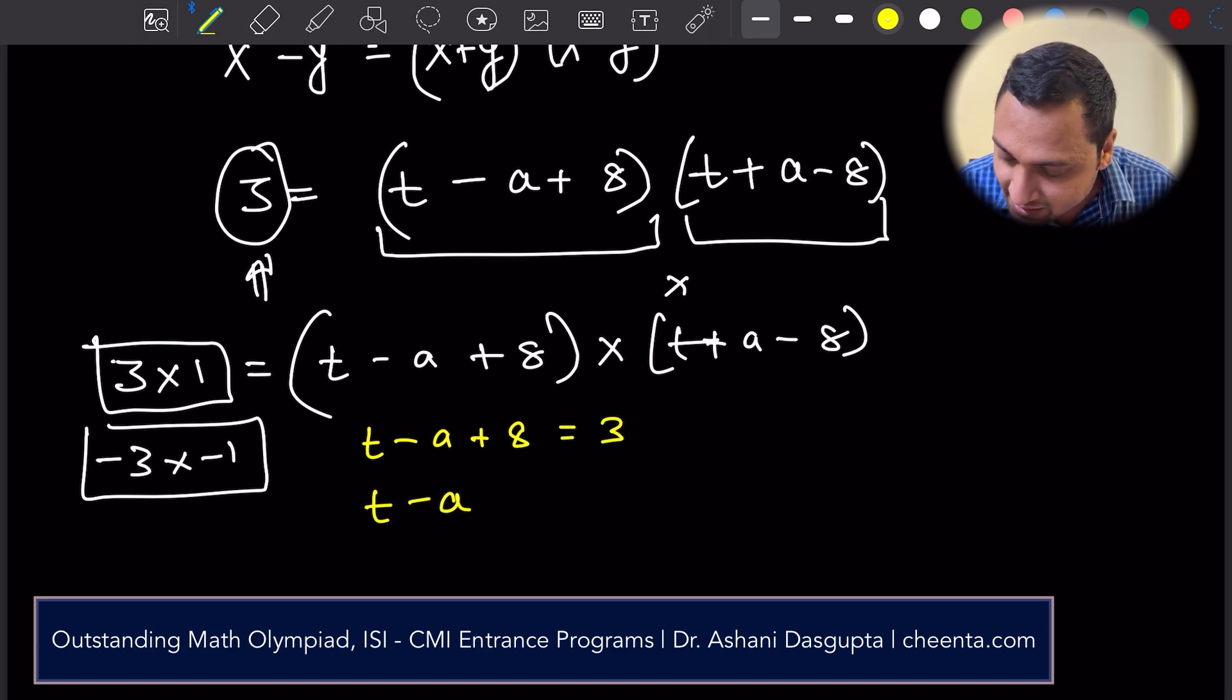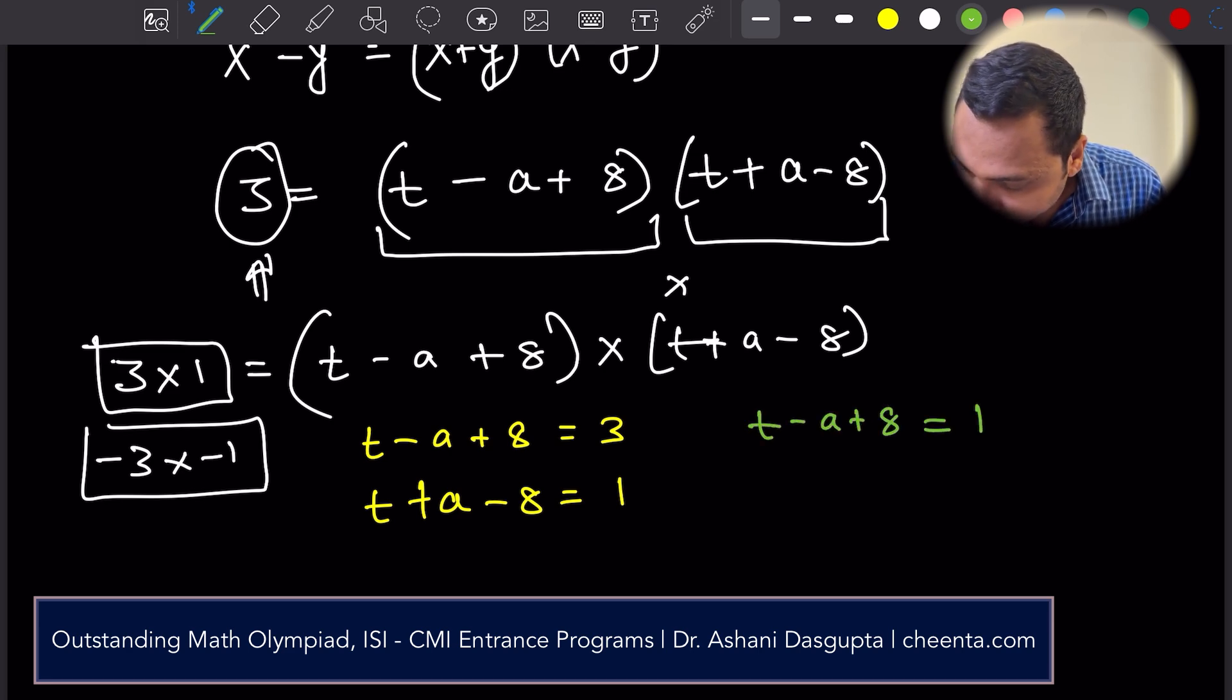The first equation is t minus a plus 8 is equal to 3, t plus a minus 8 equals to 1. That's one equation. We can have another one. t minus a plus 8 equals to 1, t plus a minus 8 equals to 3.